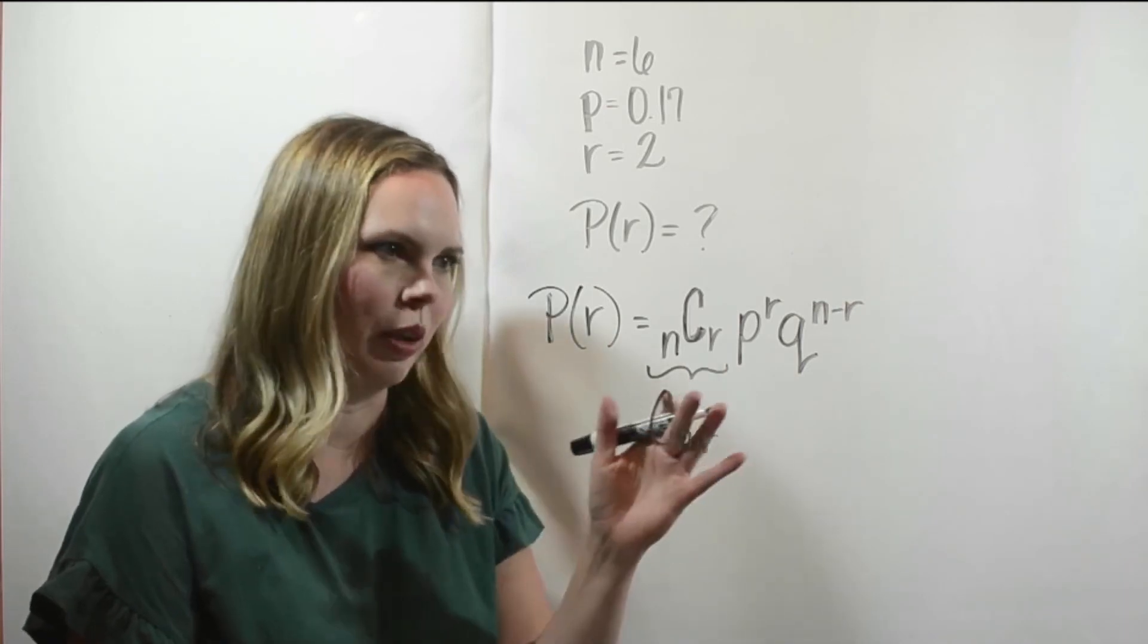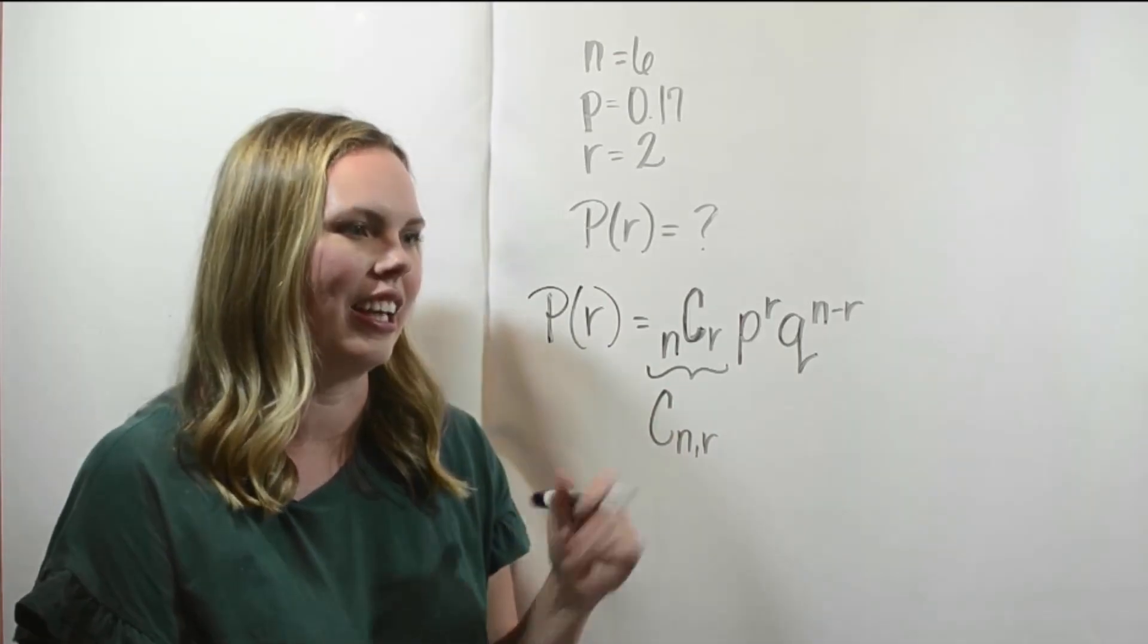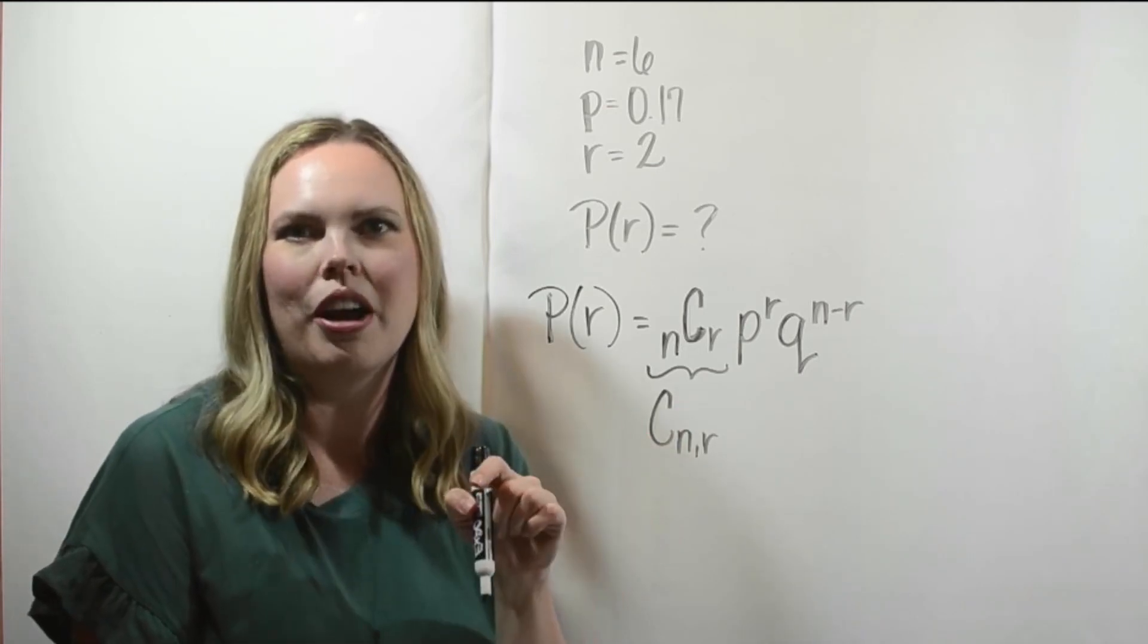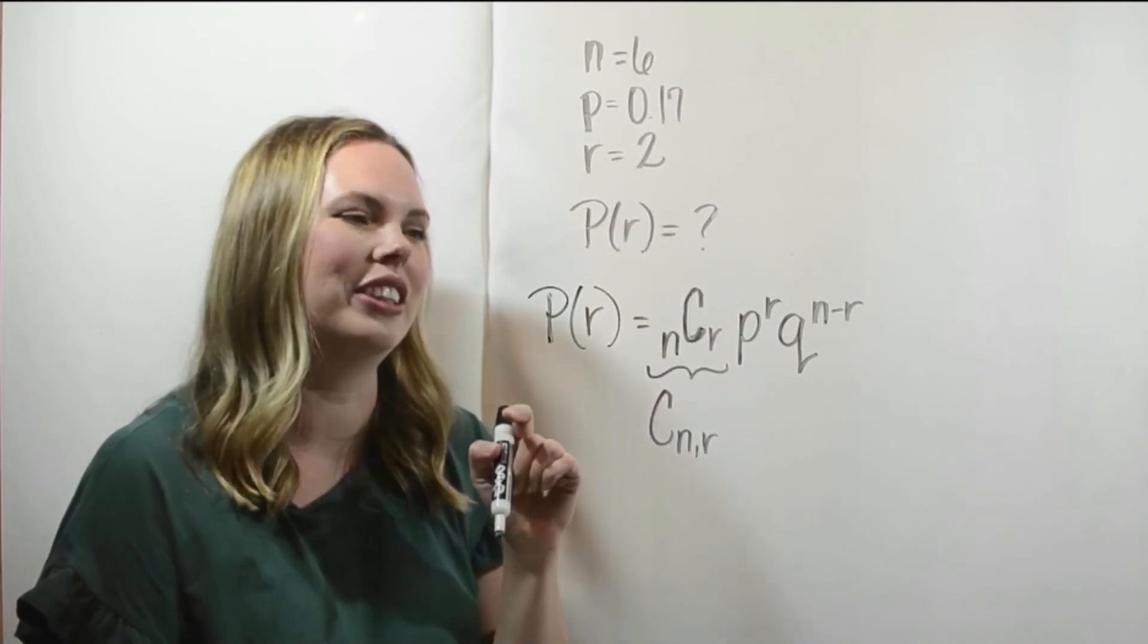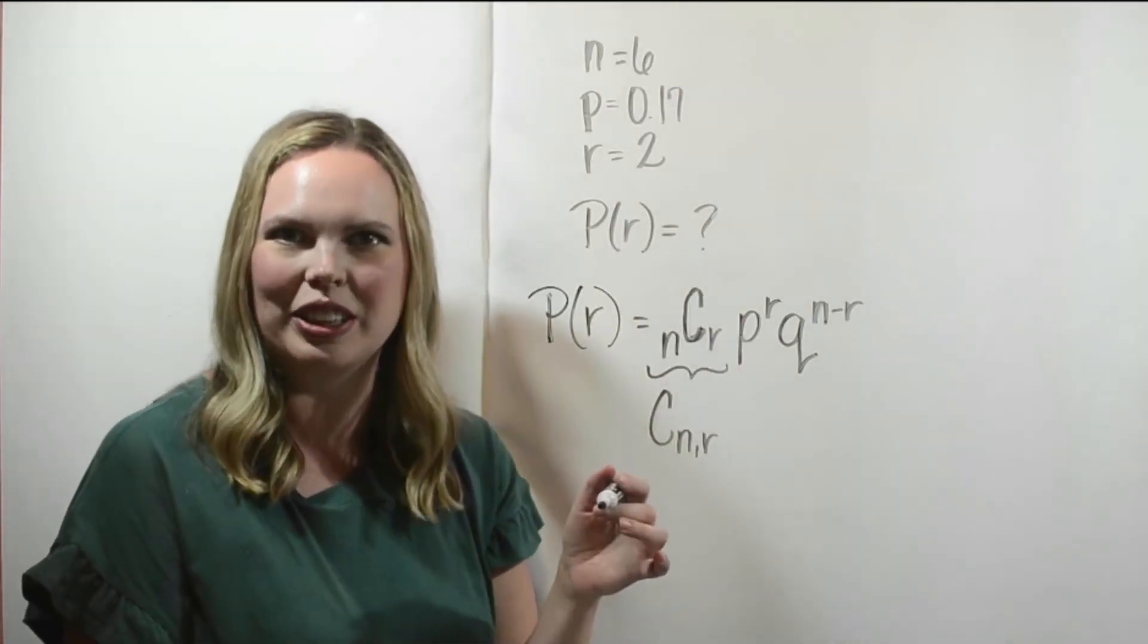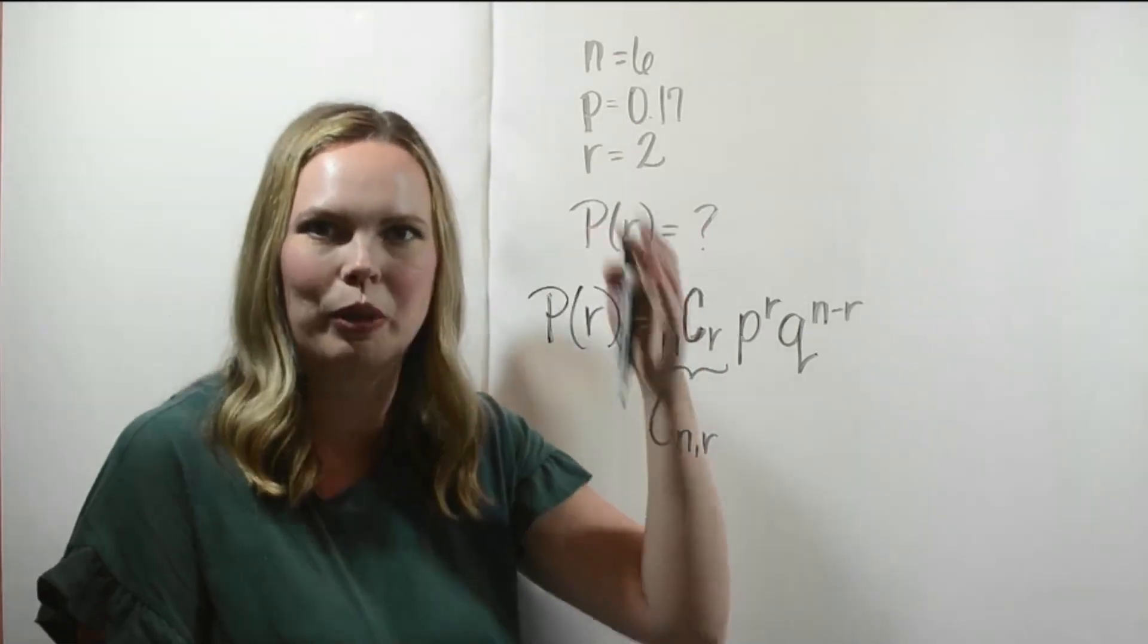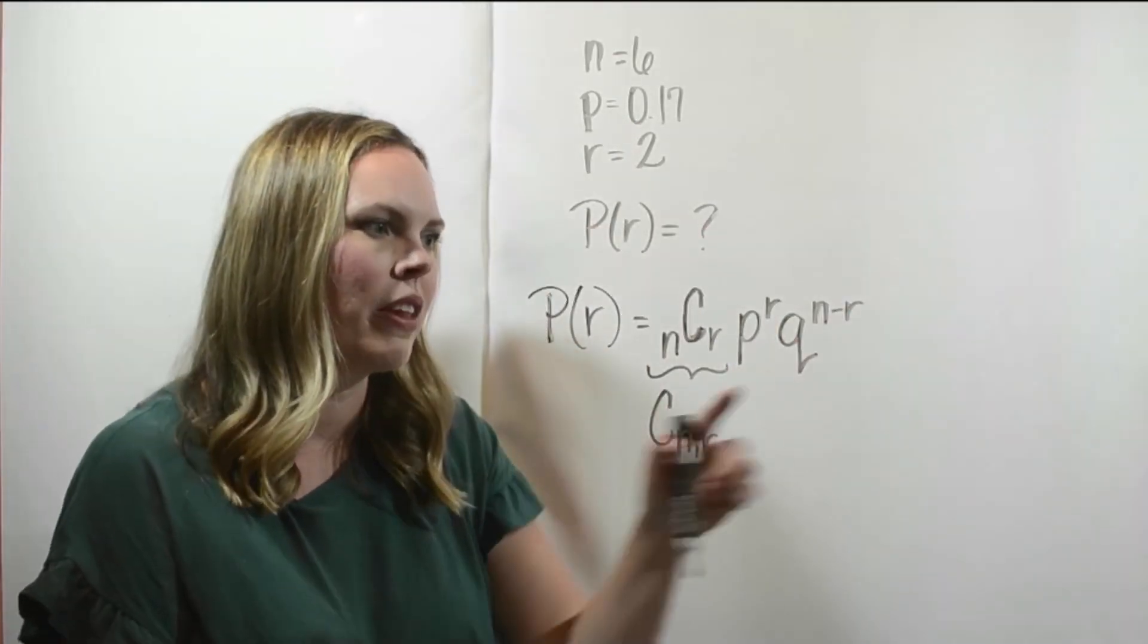So this is the formula, but it looks a little confusing, and so if you don't know how to work at it, it can be a problem. So this N C R, it calculates the number of ways that we can have two successes in six trials. P is the probability of a success, as we've talked about, and we raise that to R, the number of successes that we want. So this would be like if we wrote 0.17 times 0.17, because we want those two successes.